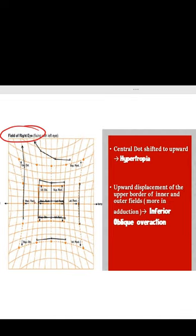what we notice is that the central dot is shifted upwards or the field is shifted upwards, that means the right eye is hypertropic.